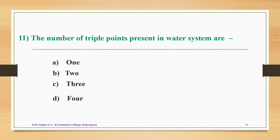Question number eleven: the number of triple points present in the water system are — option A is 1, option B is 2, option C is 3, option D is 4. The correct answer is option A — the number of triple points present in the water system is 1.